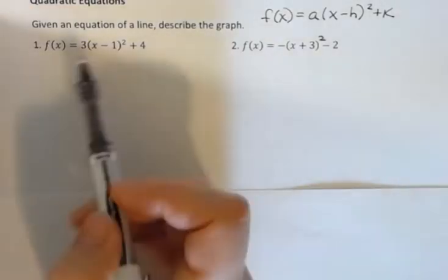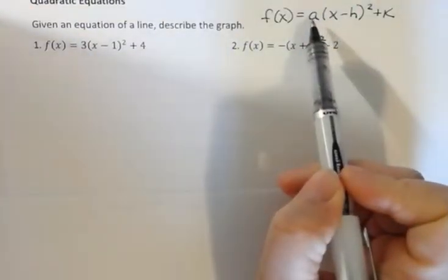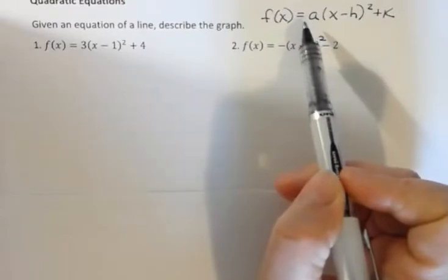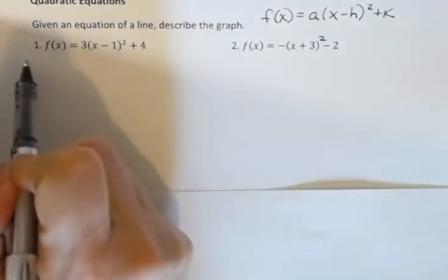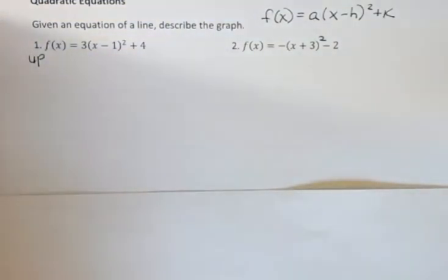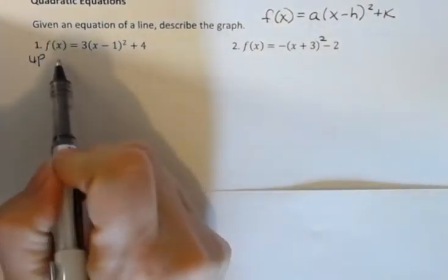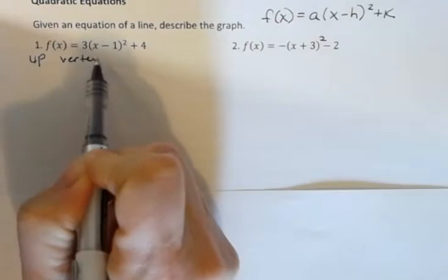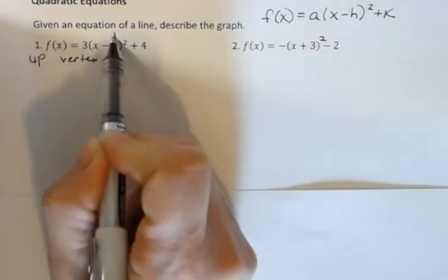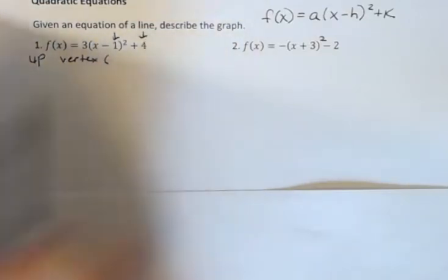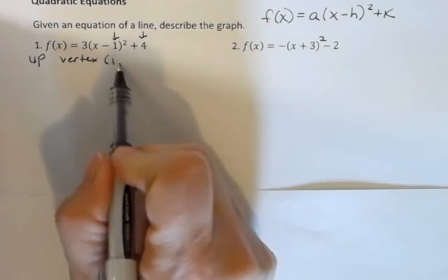And so when I look at this, the a in front tells me whether the graph opens up or down. So in this first one where I see a positive three, I know for sure my graph opens up. So that tells me one thing about my graph. The next thing I know is what is the vertex. The vertex I can see from looking at these two values right here. And the vertex here then is 1, 4.